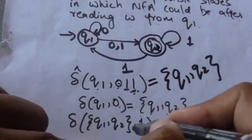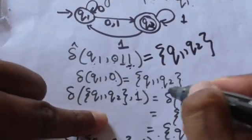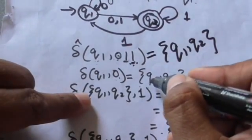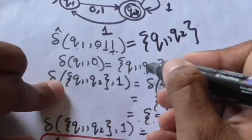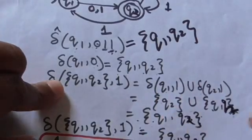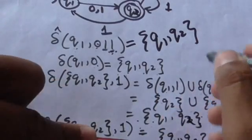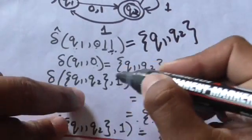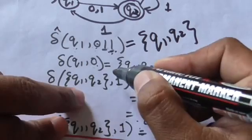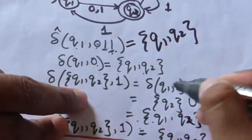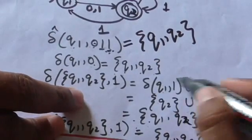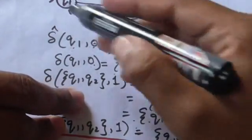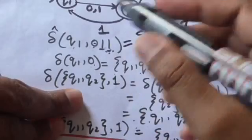Now apply the second input symbol of the string 0 1 1, that is 1, to this set of states {q1, q2}. We will apply 1 to state q1, then apply 1 to state q2, and take the union of both results.